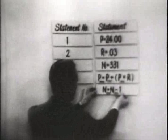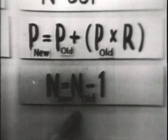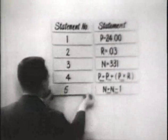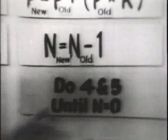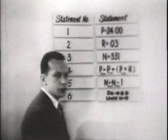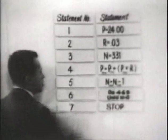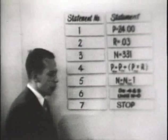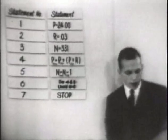Next, we would instruct the operator to count the number of years: take n, subtract one from it, and replace this quantity to get a new value of n. Then repeat statements four and five until n has been reduced to zero. Once n has been reduced to zero, we have obtained the answer and will stop. This would be the series of instructions necessary to provide to a clerk or desk calculator operator to compute our problem. A few slight changes can convert it to a FORTRAN program.